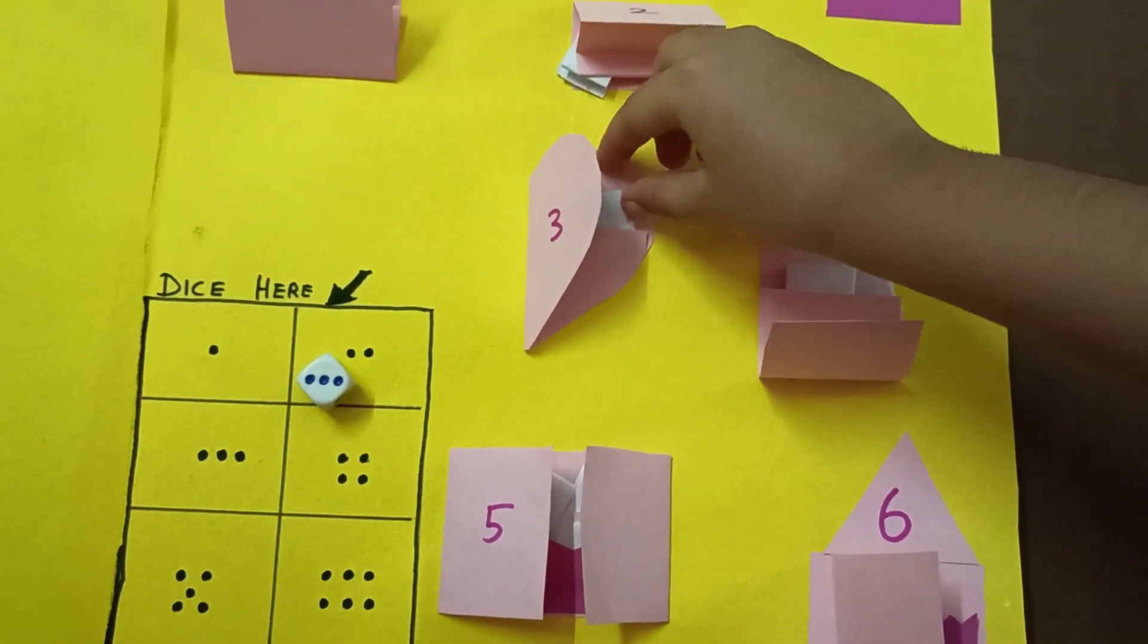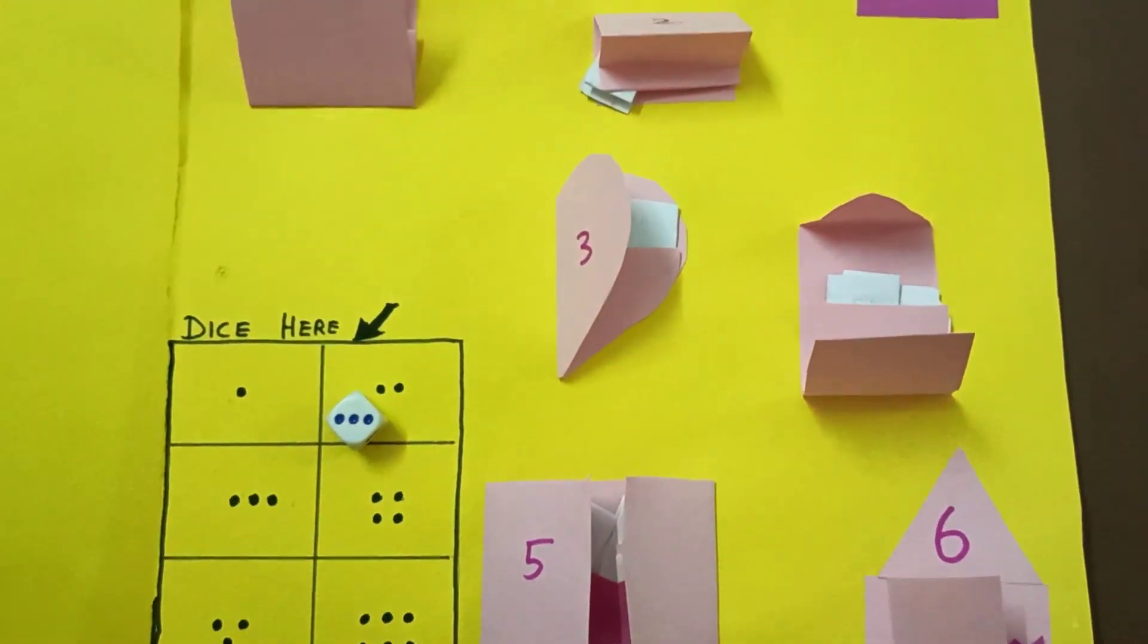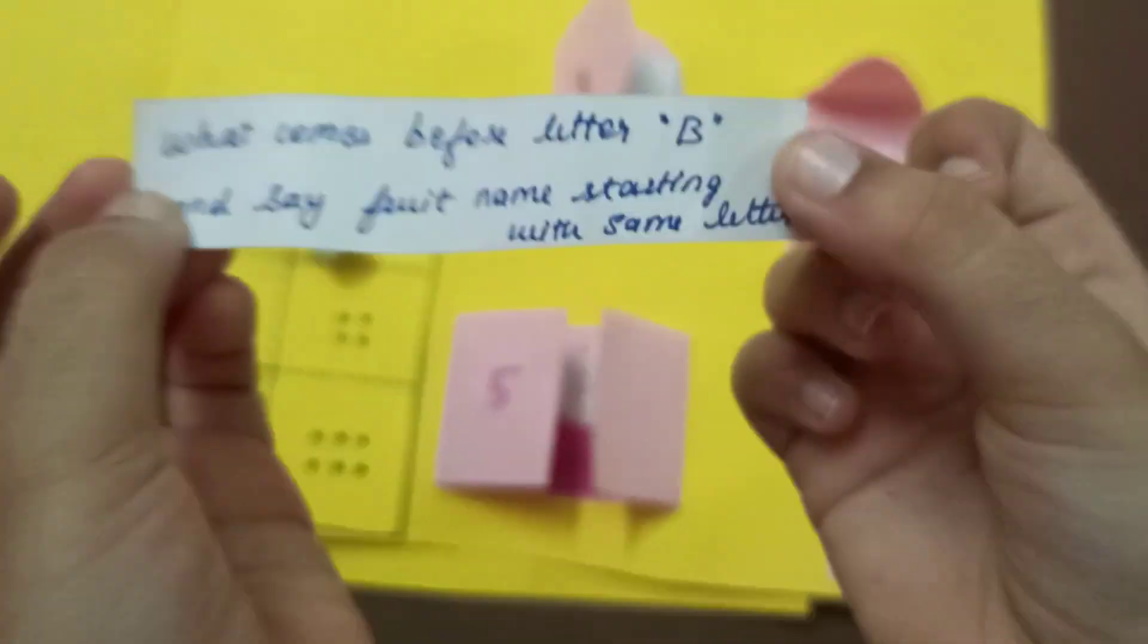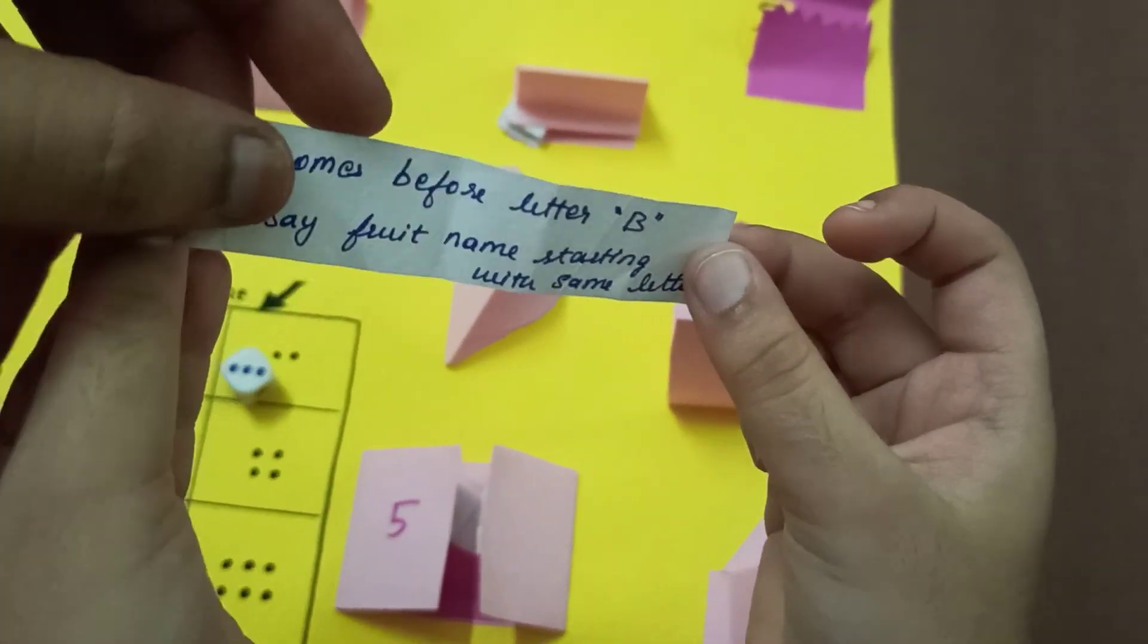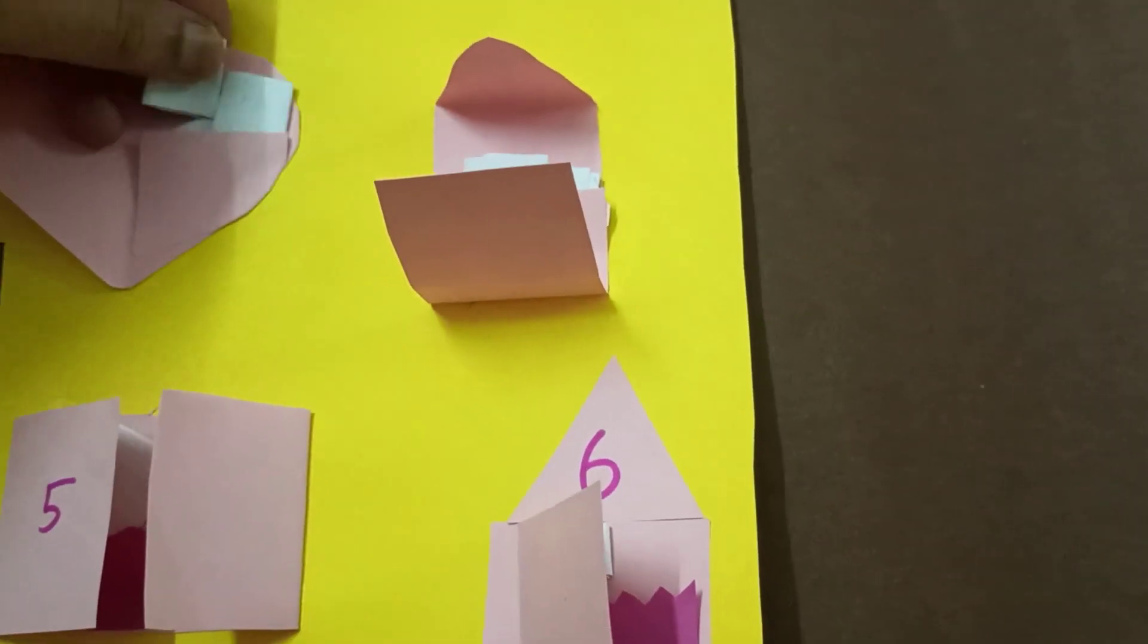So it's three. Actually I have to take a chance. She is playing on her own. She is going to take all the smileys I think. So what is this? What comes before the letter B? And say the fruit name starting with the same letter. A. Apple. Okay, that's good. So now,